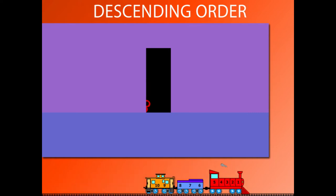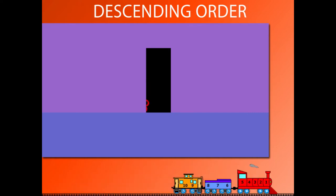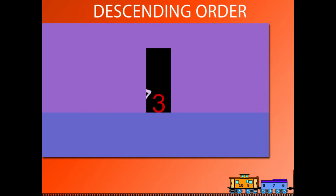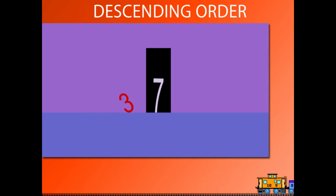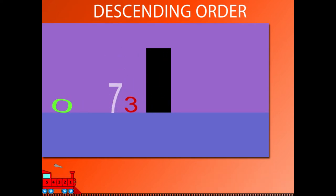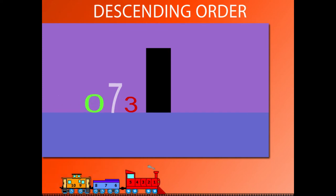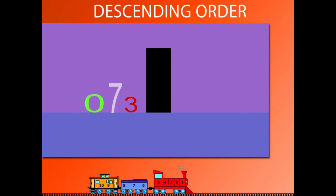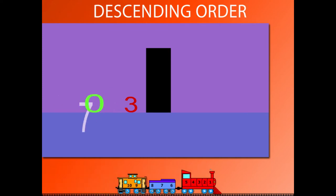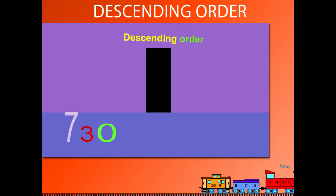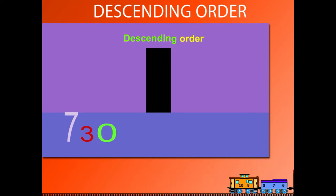Here come numbers from behind the wall. Here comes 3, 7, and 0. 7 is the largest of the 3. So in descending order, they will read as 7, 3, 0.